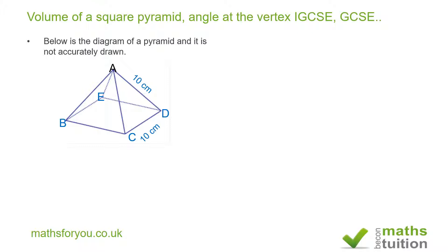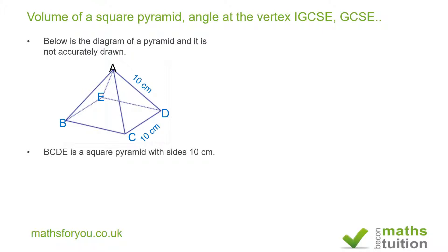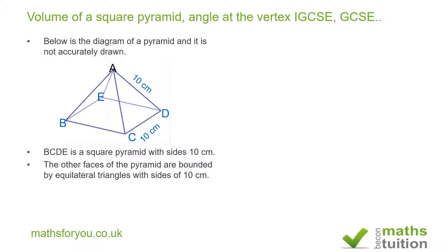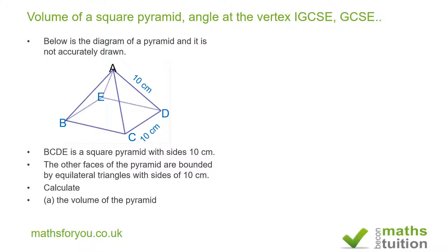So this is a diagram. BCDE is a square pyramid with sides of 10 centimeters. The faces of the pyramid are bounded by equilateral triangles with sides of 10 centimeters. We need to calculate the volume of the pyramid and secondly find the angle DAB, which is the angle at the vertex.